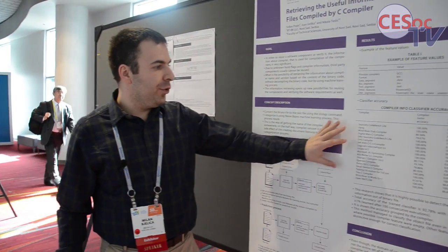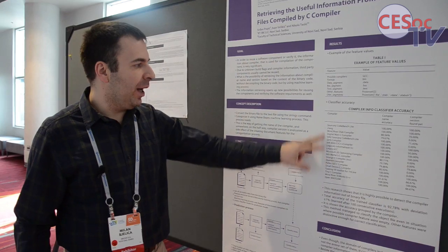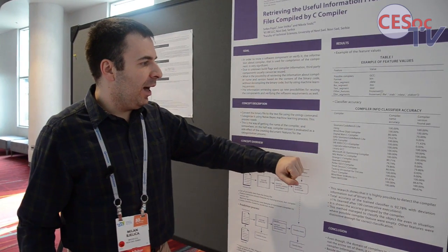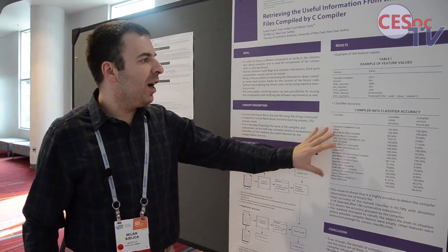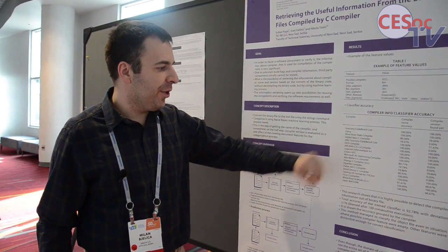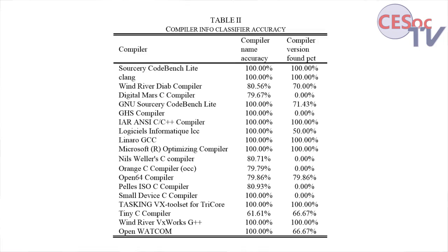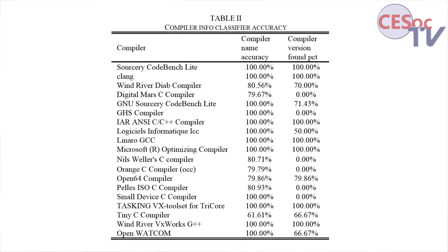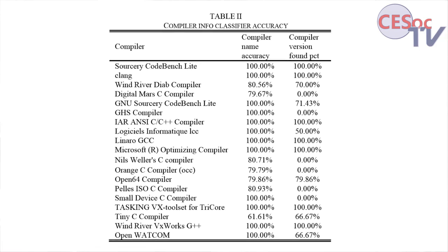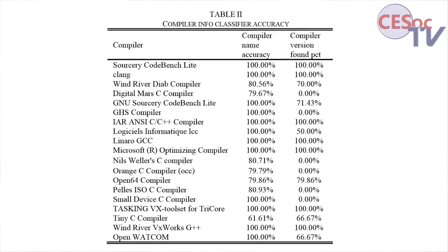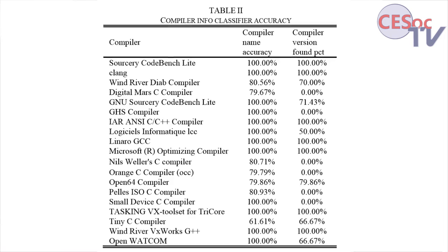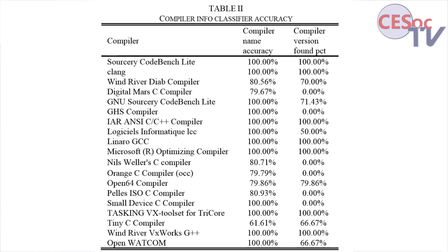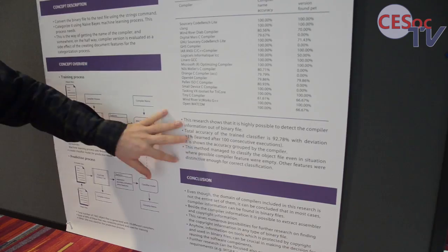During the assessment with different compilers, we found there is pretty high classifier accuracy. On average, it is above 90% classifying accuracy for the compiler name and the compiler version.